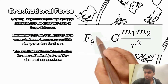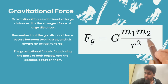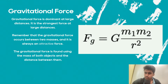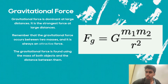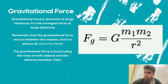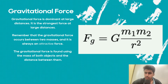Now, gravitational force. At large distances, the dominant force will be gravitational force. It is a very, very strong force at very large distances. Remember that gravitational force occurs between objects with masses, and it is always an attractive force — it can never be a repulsive force. Gravitational force is found using the mass of both objects and the distance between them. This is the formula known as the universal law of gravitation: Fg equals G — capital G, not lowercase g, which is 9.8 — times m1 times m2 over r squared.